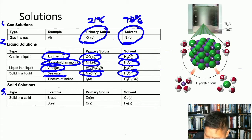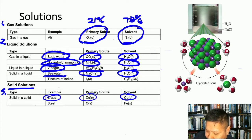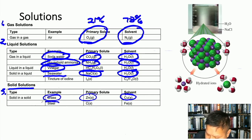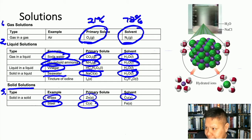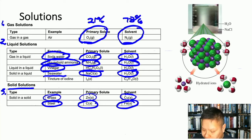Solid solutions are mostly metal alloys. Brass is made of zinc and copper; since there's more copper, copper is the solvent and zinc is the solute. Steel contains carbon dissolved in iron — that's why it's called carbon steel. Adding carbon to iron makes it stronger.